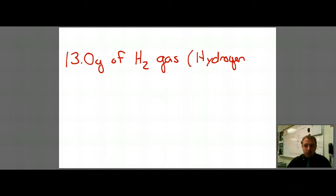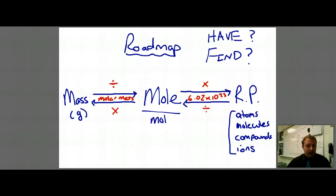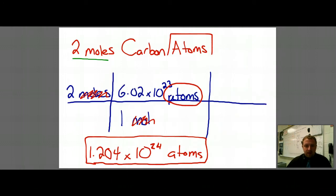Now, here's what we're going to do next. Let's say that I have been given 13.0 grams of H2 gas. Now this is hydrogen gas. All right, and so I go to my roadmap, and I say, I have mass. The only thing I can find is moles. So let's go ahead and find moles.